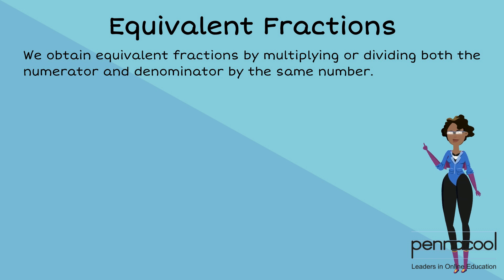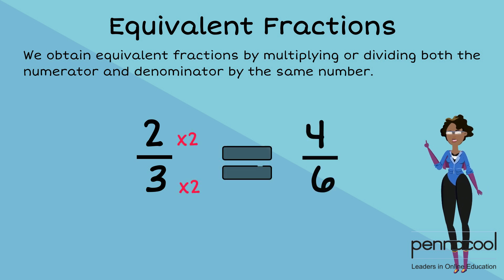For example, if we take the fraction two-thirds and multiply the numerator and denominator by two, we get the fraction four-sixths.